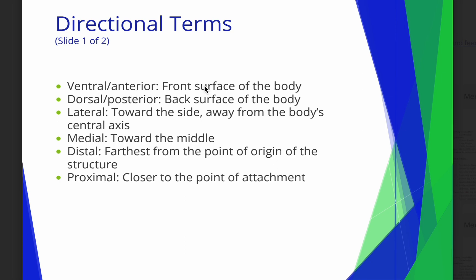Ventral and anterior mean the front of your body. Dorsal and posterior means the back of your body. We could use either word — dorsal aspect or posterior aspect of the hand both refer to the back surface. So if you were going to backhand someone, that is the dorsal or posterior aspect of your hand. The palm surface, the palmar surface, is your ventral or anterior. If I'm slapping somebody, it's ventral. If I'm backhanding them, it's dorsal.